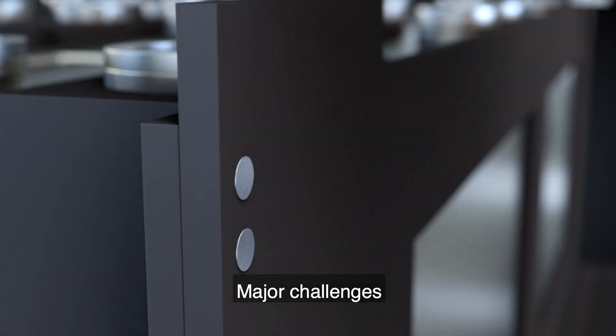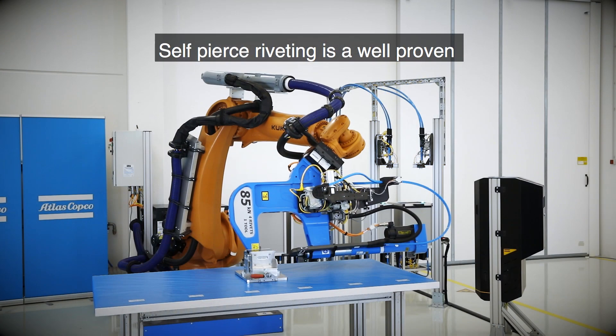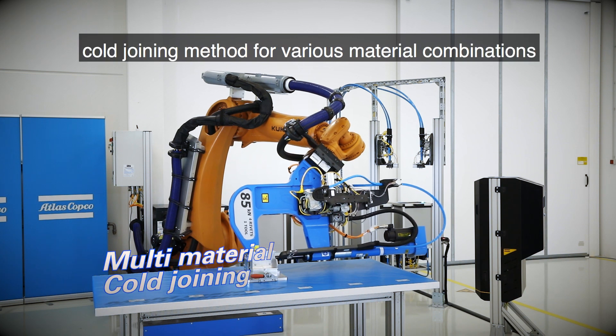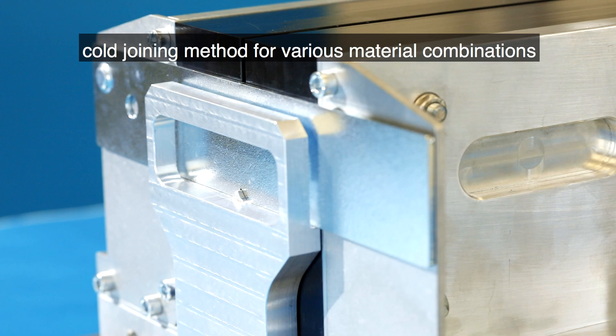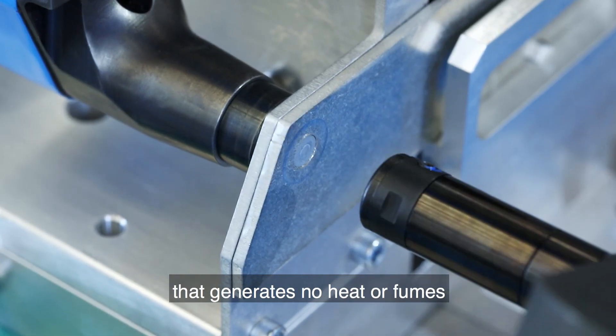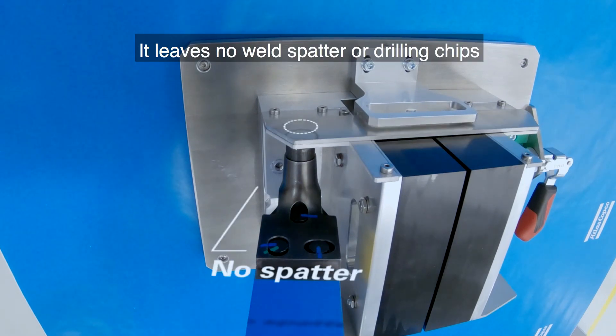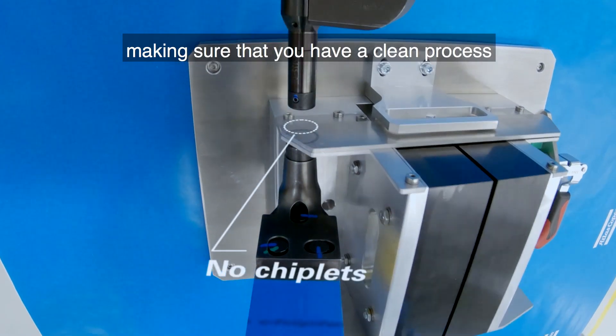These major challenges have one solid solution in common: self-pierced riveting, a well-proven co-joining method for various material combinations. It's a quick, one-shot operation that generates no heat or fumes that can harm sensitive cells. It leaves no weld splatter or drilling chips, ensuring a clean process.